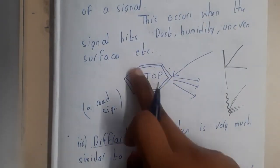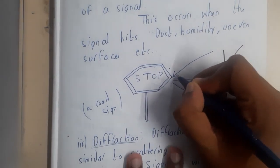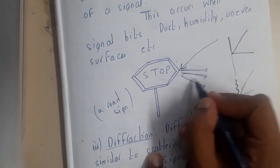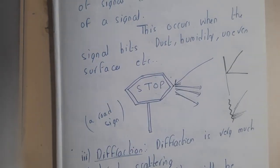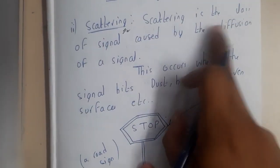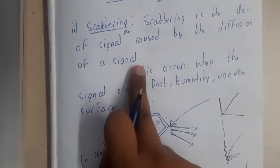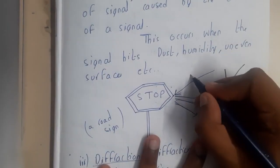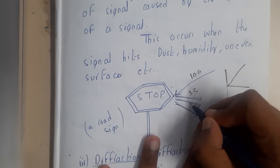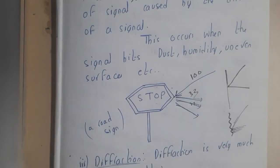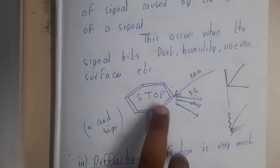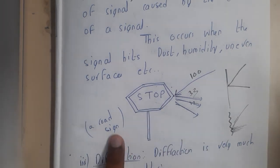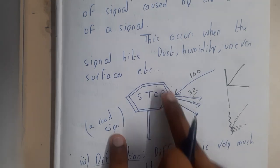Assume this is a stop sign. At that particular point, if a radio wave hits, it will divide into multiple radio waves. This concept of dividing or diffusion into multiple paths is nothing but scattering. Scattering is a loss of signal caused by the diffusion of the signal. If the signal strength was previously 100, divided into three parts it becomes 33.33 each, and at some point it will not be strong enough to be captured. Road signs with curved or sharp edges are a good example of objects that scatter radio waves.